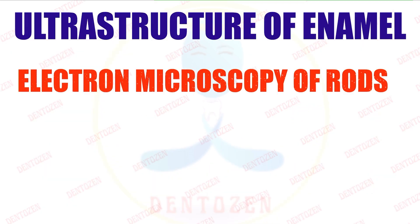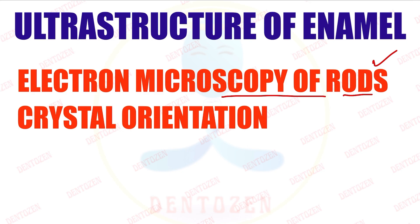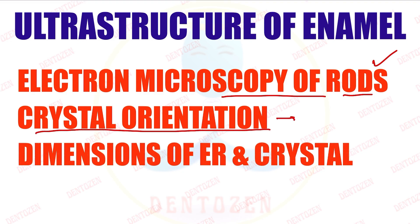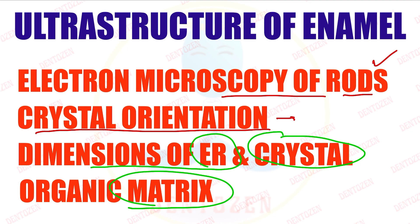In this video we are going to cover the ultra structure of enamel in four parts. First, we will discuss the electron microscopic appearance of these rods. Second, we will discuss how the crystals are oriented and how they appear in the electron microscope. Third, we will see the dimensions of the enamel rod as well as the crystal. Fourth, we will see how organic matrix is observed under the electron microscope.